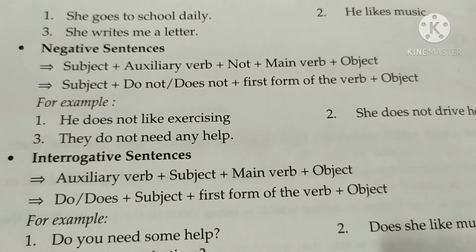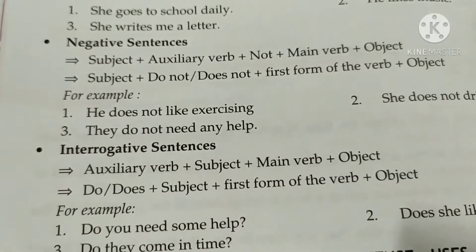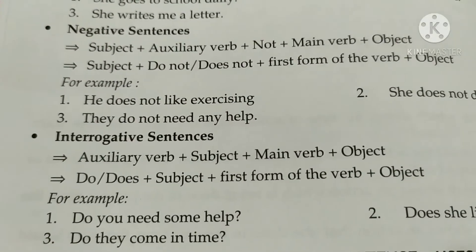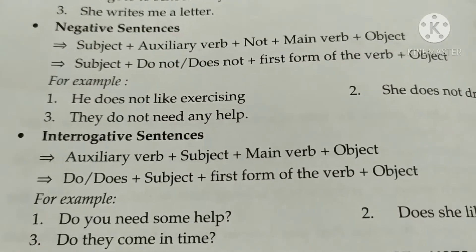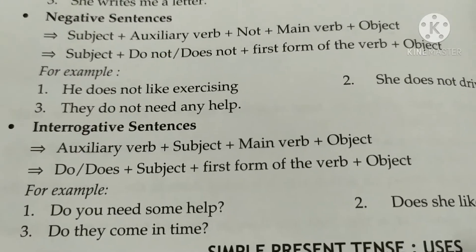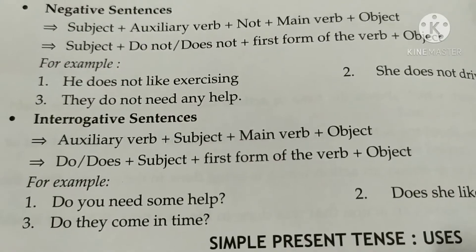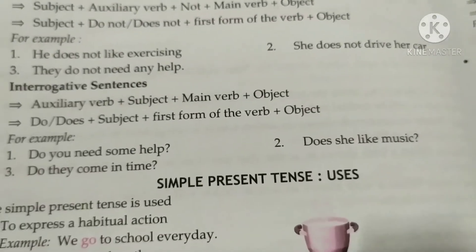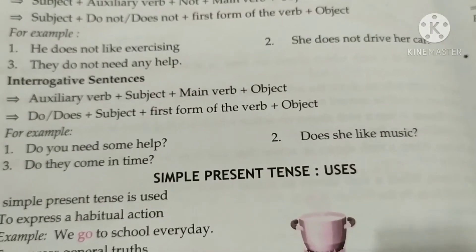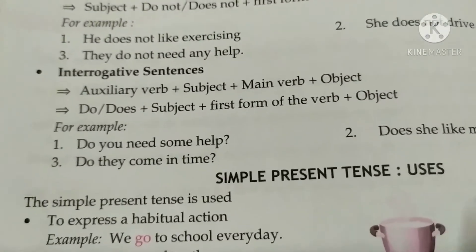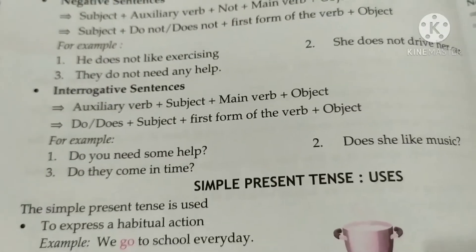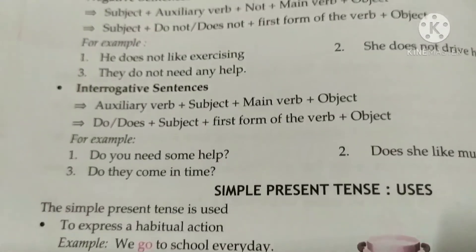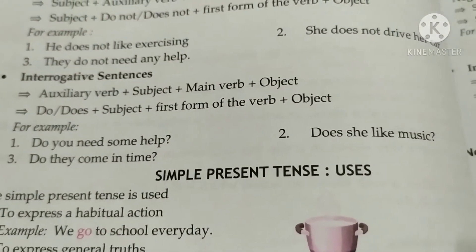For a negative sentence, the format is: Subject + auxiliary verb + not + main verb + object, that is Subject + do not / does not + first form of verb + object. Examples: 'He does not like exercising,' 'She does not drive her car,' 'They do not need any help.' When using he or she, we use 'does not'; for plural subjects, we use 'do not'.